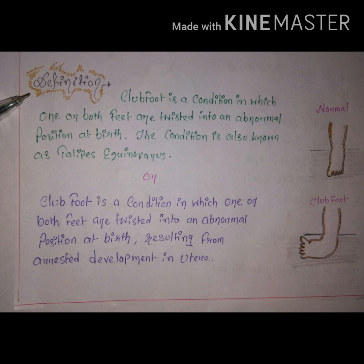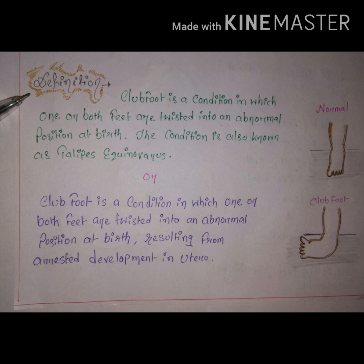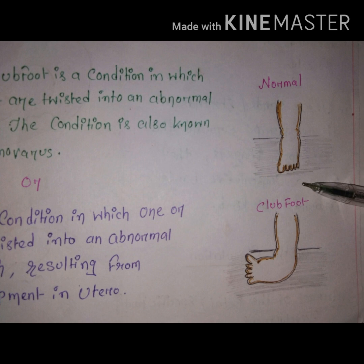The first definition: clubfoot is a condition in which one or both feet are twisted into an abnormal position at birth. It is a congenital malformation. The feet — one or both — are twisted from birth, generally inward, and that condition is also known as talipes equinovarus.